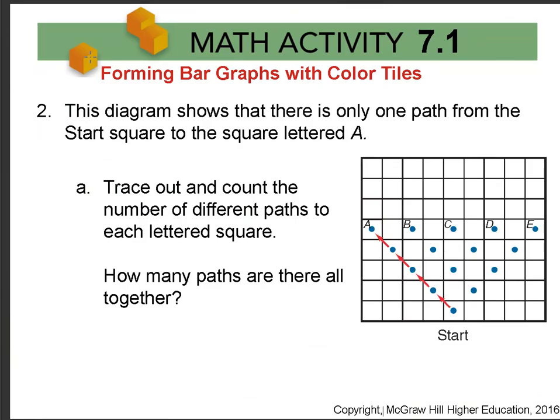Then in number two, we talk about the pathways. So this diagram shows there was only one way to get to that letter A, all green or left spins. So how can you get to the other letters? How many paths are there all together? Write these down through a series of spins.